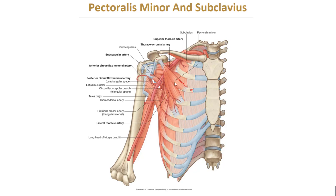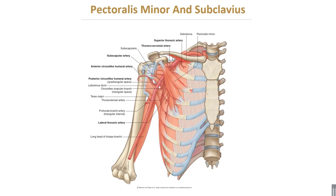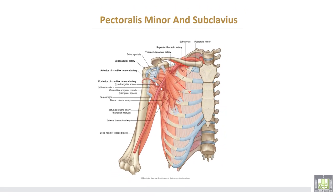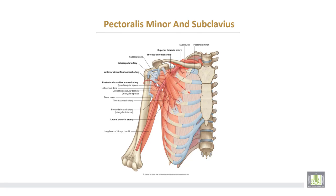The subclavius muscle takes origin from the upper surface of the first costal cartilage and is inserted into the groove on the inferior surface of the clavicle.